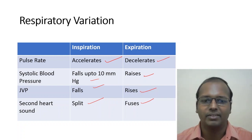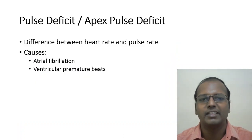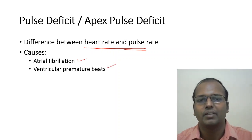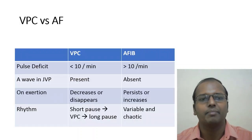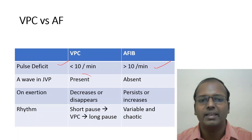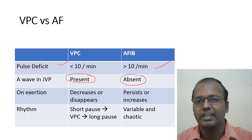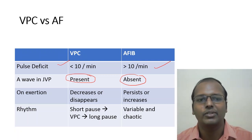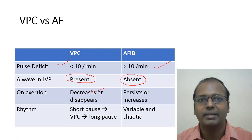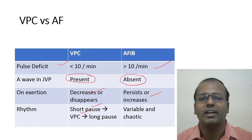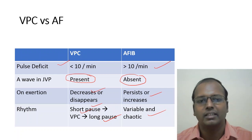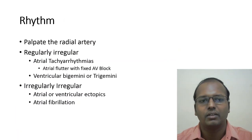Pulse deficit or apex pulse deficit is the difference between heart rate and pulse rate. It occurs in atrial fibrillation or ventricular premature beats. In VPC, pulse deficit is usually less than 10 per minute; in AF, more than 10 per minute. A-wave in JVP is present in VPC but absent in AF since the a-wave results from atrial contraction. On exertion, VPCs decrease or disappear, whereas AF persists or increases. VPC rhythm shows a short pause then a long pause; AF rhythm is variable and chaotic.